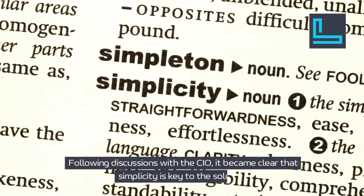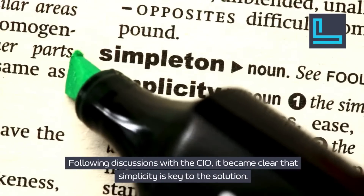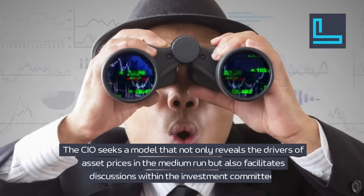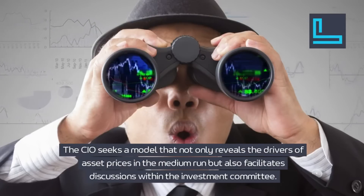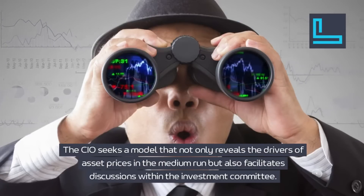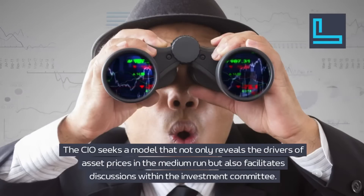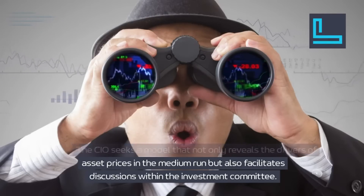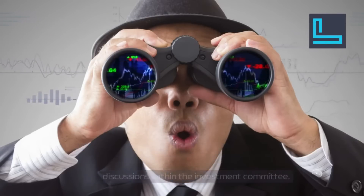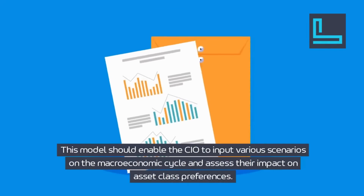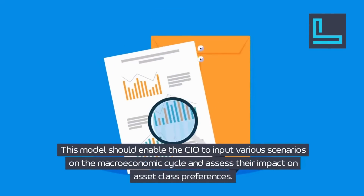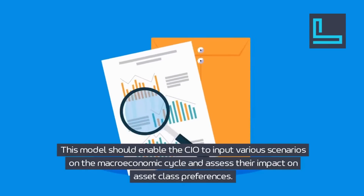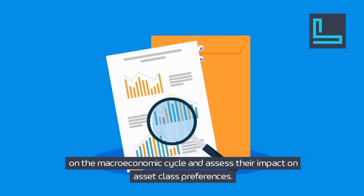Following discussions with the CIO, it became clear that simplicity is key to the solution. The CIO seeks a model that not only reveals the drivers of asset prices in the medium run, but also facilitates discussions within the investment committee. This model should enable the CIO to input various scenarios on the macroeconomic cycle and assess their impact on asset class preferences.